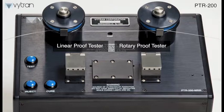Our rotary proof tester can be used for proof or tension testing. The rotary proof tester is ideal for process qualification where very high proof test or tension test levels are required.